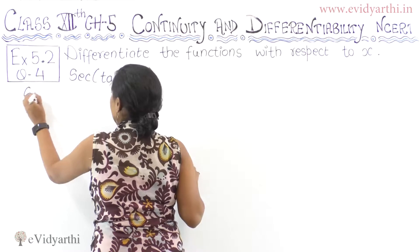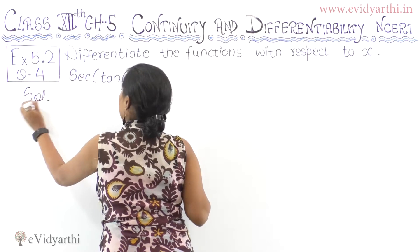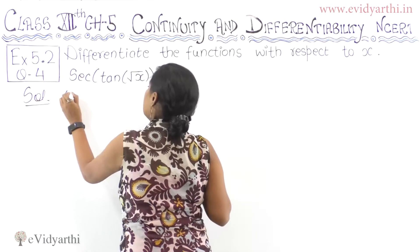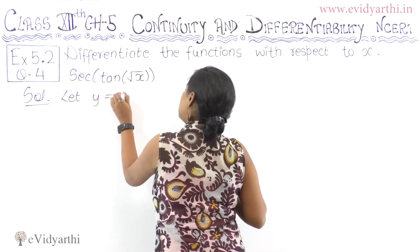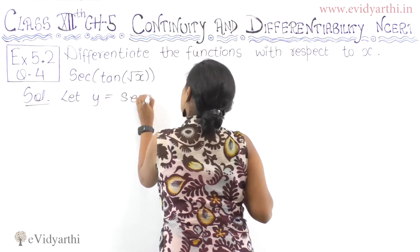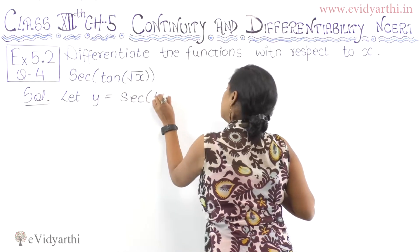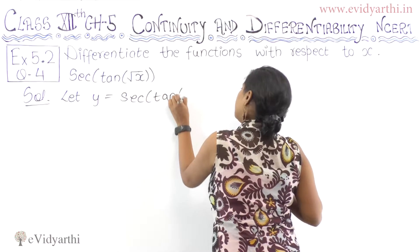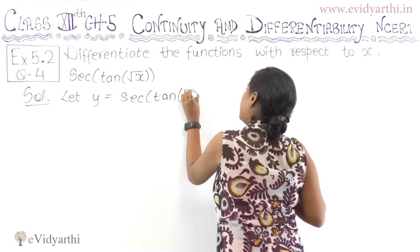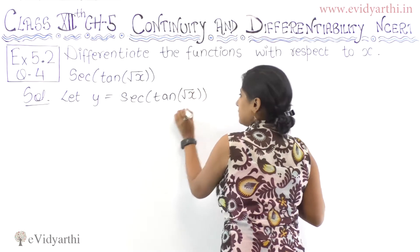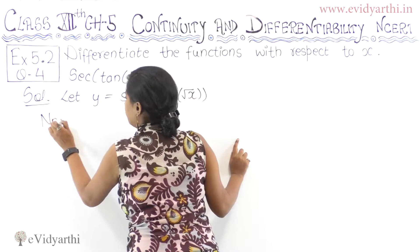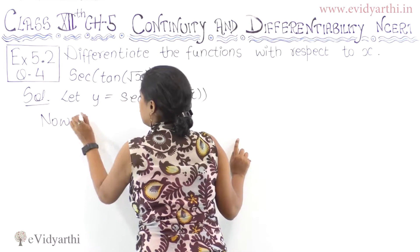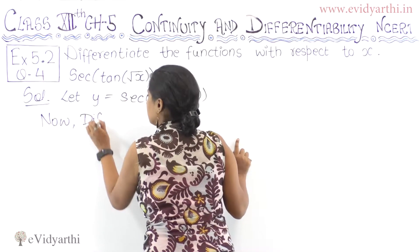In this case we have the chain rule. So first of all, let y equal to sec of tan of under root x. Now, differentiating both sides.